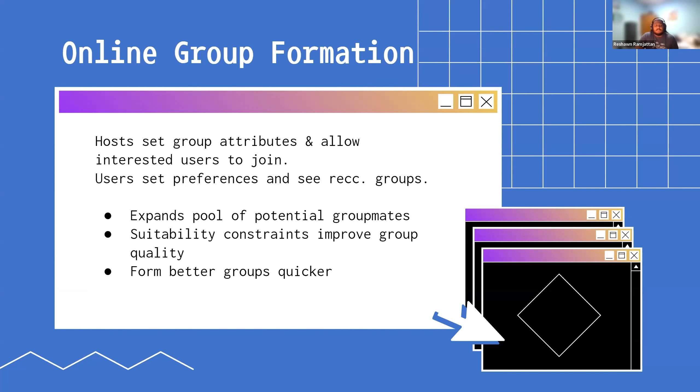Looking at it from an online perspective brings a lot of benefits. We can formulate the problem so that the host, the person hosting the party or hosting the study group, they set up the attributes of the group. They say things about the party like what type of music is going to be there, what type of drinks are going to be available, if there are any alcoholic drinks, and then if it's private, can allow interested people to join or attend.